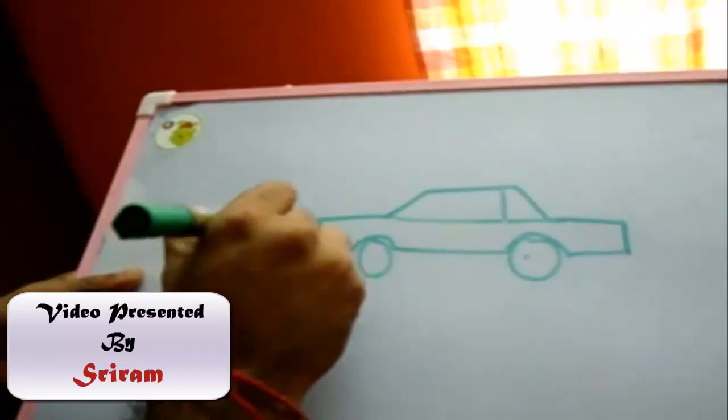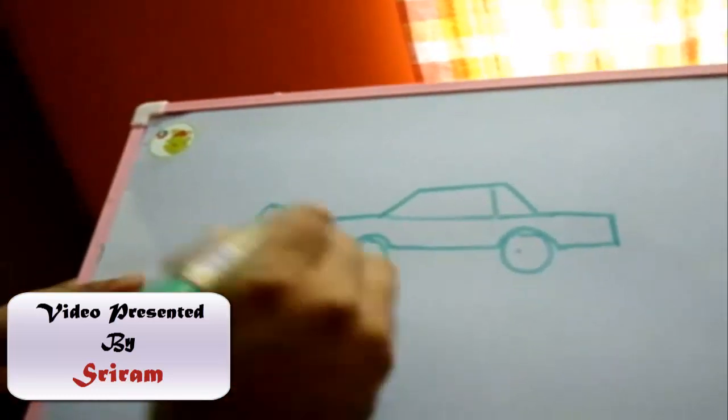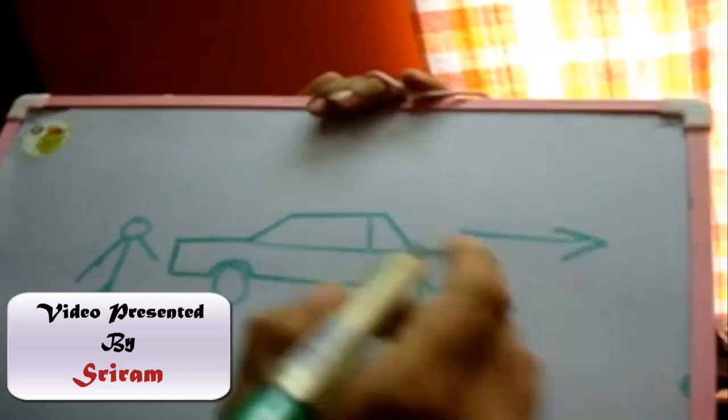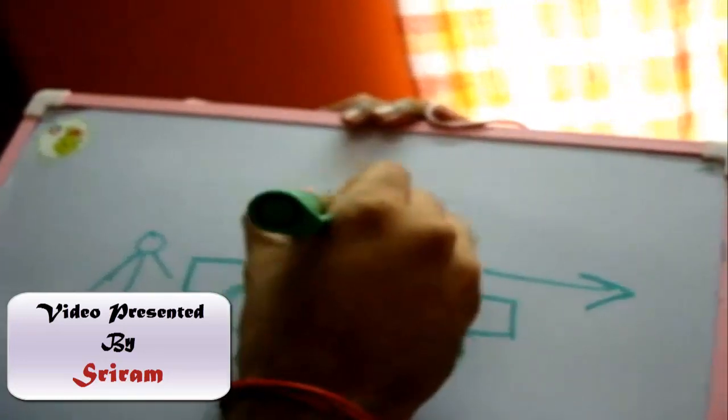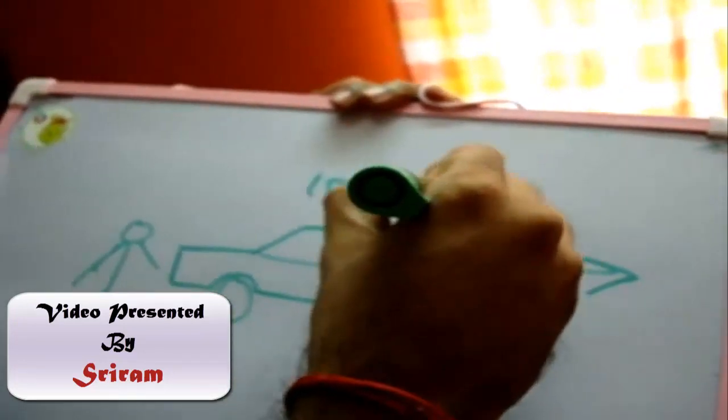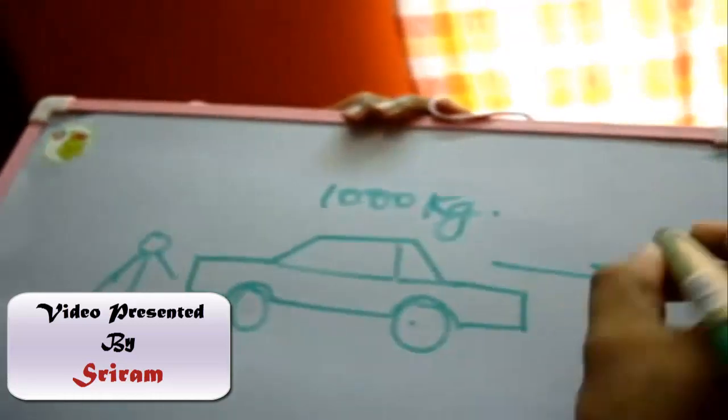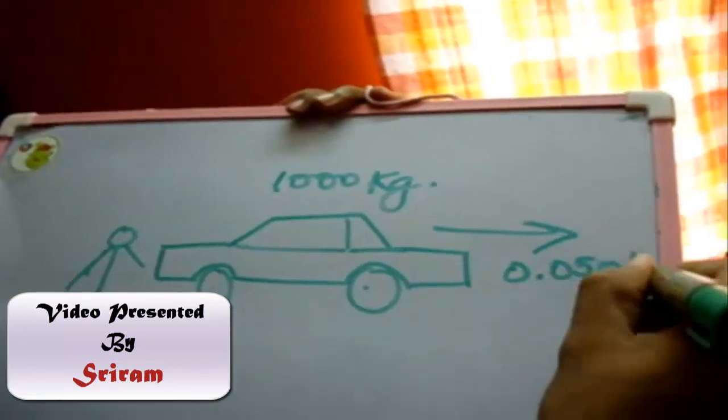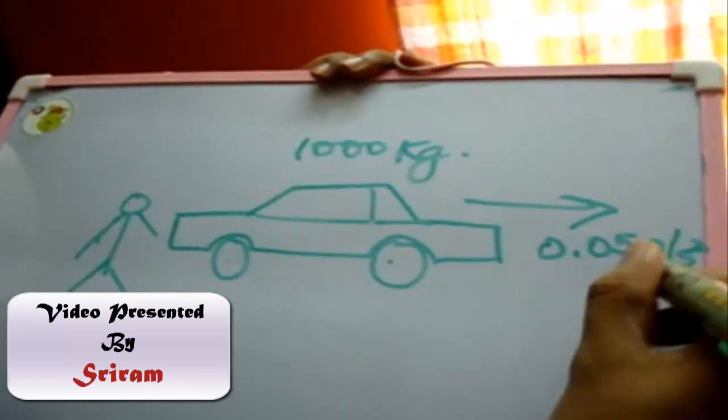Let us say the car is a ton, that is 1000 kilograms, and I require an acceleration of 0.05 meters per second square. Since it is acceleration, we have to note the unit: it is meters per second square, it's not velocity.